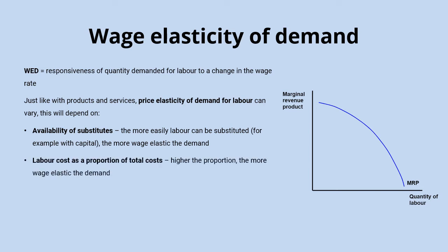Another factor is labour cost as a proportion of total costs. The higher the proportion of labour costs, the more wage elastic the demand is likely to be. That's because the bigger the proportion of wages as a share of total costs, the more likely a firm is to need to make cutbacks if there's an increase in wages. A firm which uses mostly capital and only a few workers won't be as affected by an increase in wages, making the demand for labour more wage inelastic.